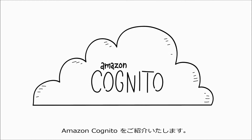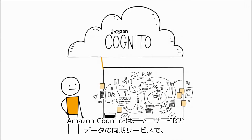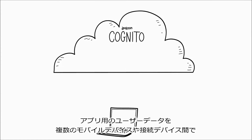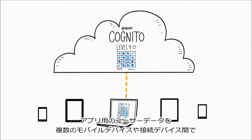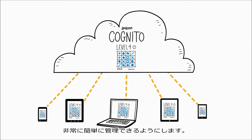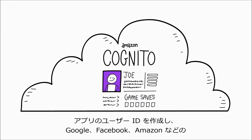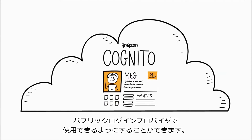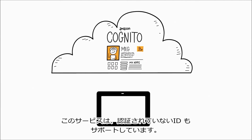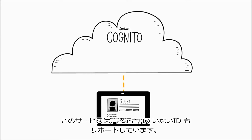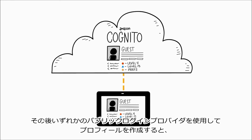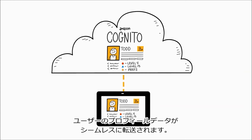Introducing Amazon Cognito. Amazon Cognito is a user identity and data synchronization service that makes it really easy for you to manage user data for your apps across multiple mobile or connected devices. You can create identities for users of your app who use public login providers like Google, Facebook, and Amazon, and the service also supports unauthenticated identities. Users can start off trying your app without logging in, and then when they do create a profile using one of the public login providers, their profile data is seamlessly transferred.